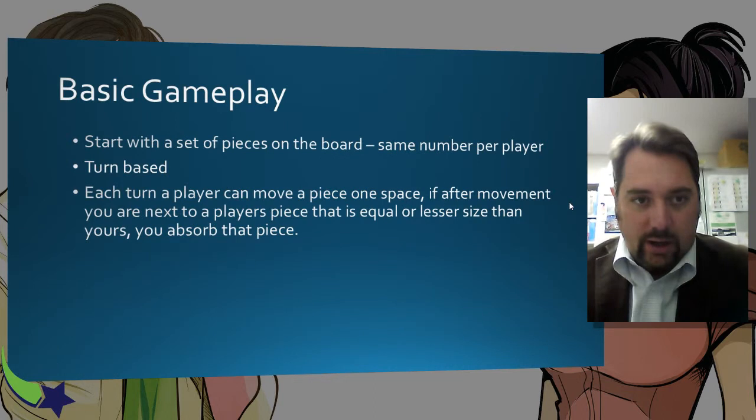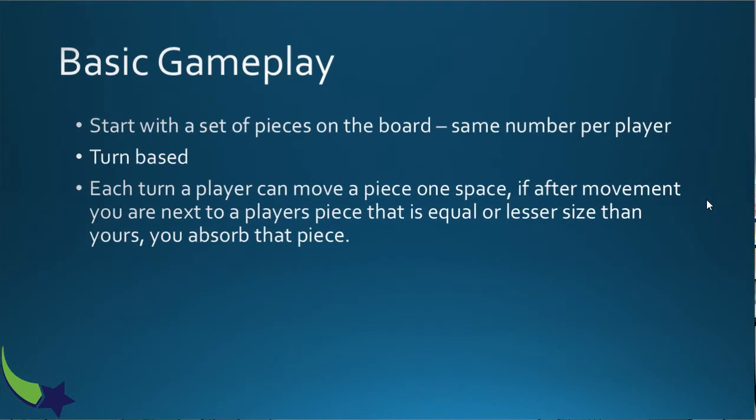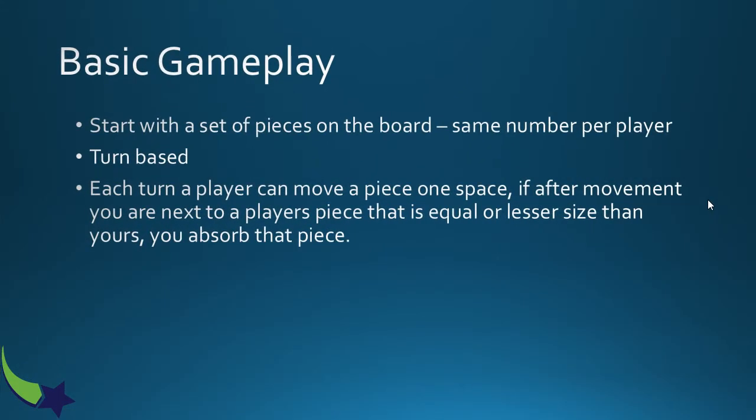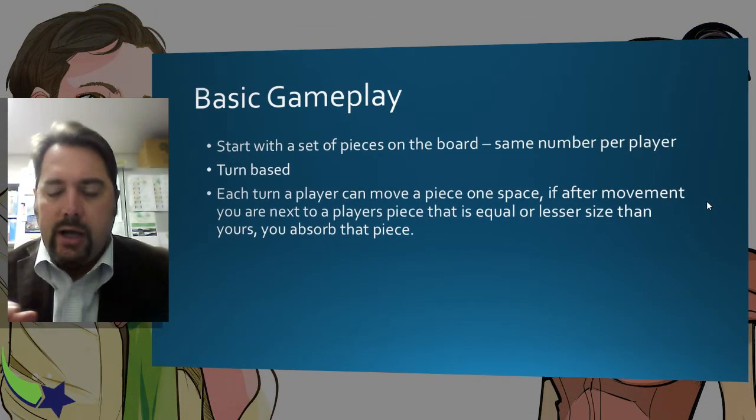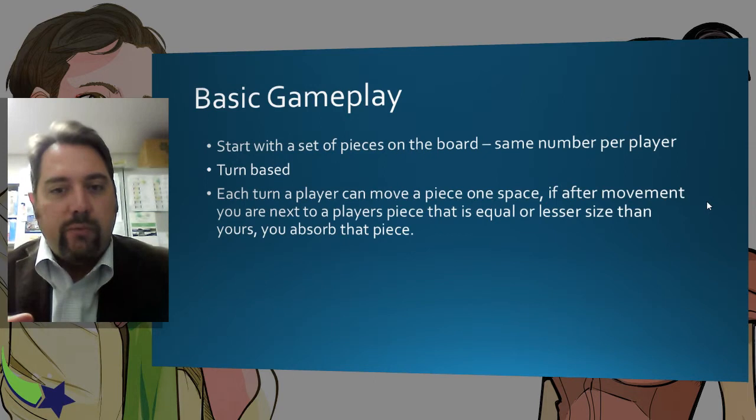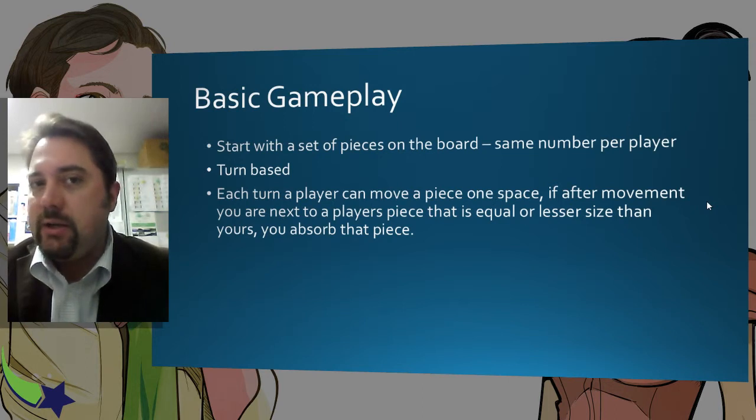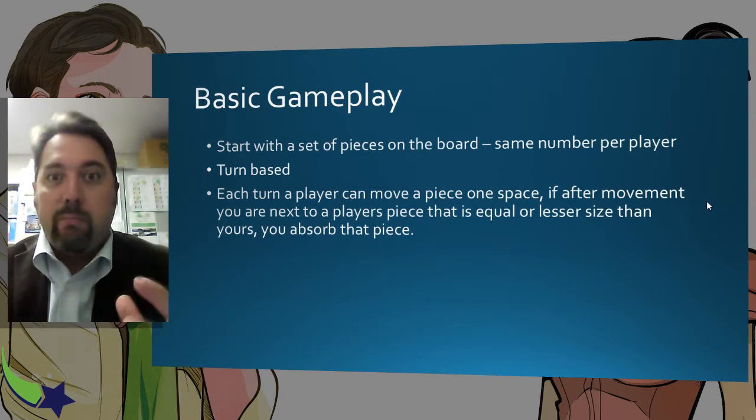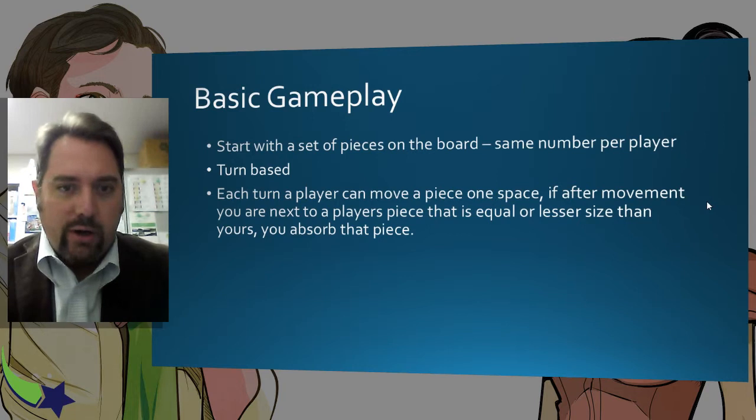So the basic gameplay, you start with the same set of pieces. So maybe start with two players and then see how it works. Maybe you step it up from there. Have a turn base just like Checkers. And basically, when you move, you can move one piece, one square at a time. And if that piece gets next to an opponent's piece that is equal or lesser size or mass, you now control that piece and it gets absorbed into one bigger piece. So let's see how that might work on a game piece.